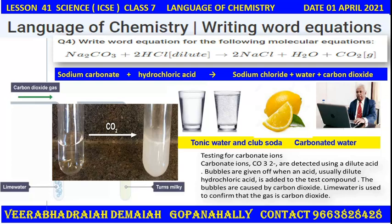A dilute acid, usually dilute sulfuric acid or hydrochloric acid, is added to the test compound. The bubbles produced are caused by carbon dioxide. Lime water is then used to confirm that the gas is carbon dioxide. This is the test for carbonates, or the test for carbon dioxide.